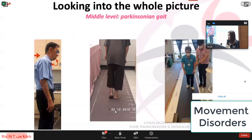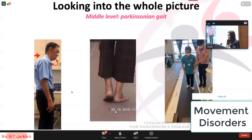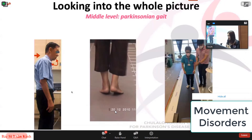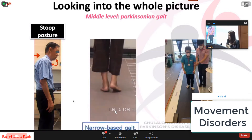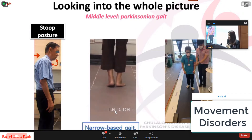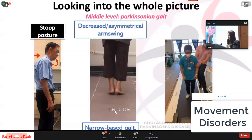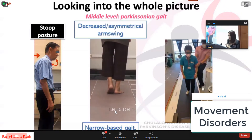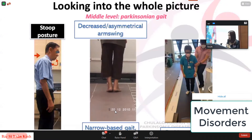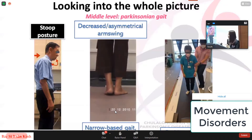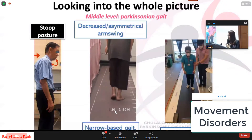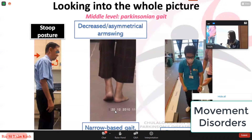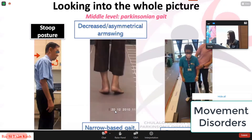Another example is the middle level gait disorder — Parkinsonian gait. In the sitting and standing position, the patient may have stooped posture. When they walk, they may have freezing at the start. The gait is slow with narrow base and reduced step height. There is also decreased or asymmetrical arm swing. After observing every feature together, you can decide that this patient has Parkinsonian gait.